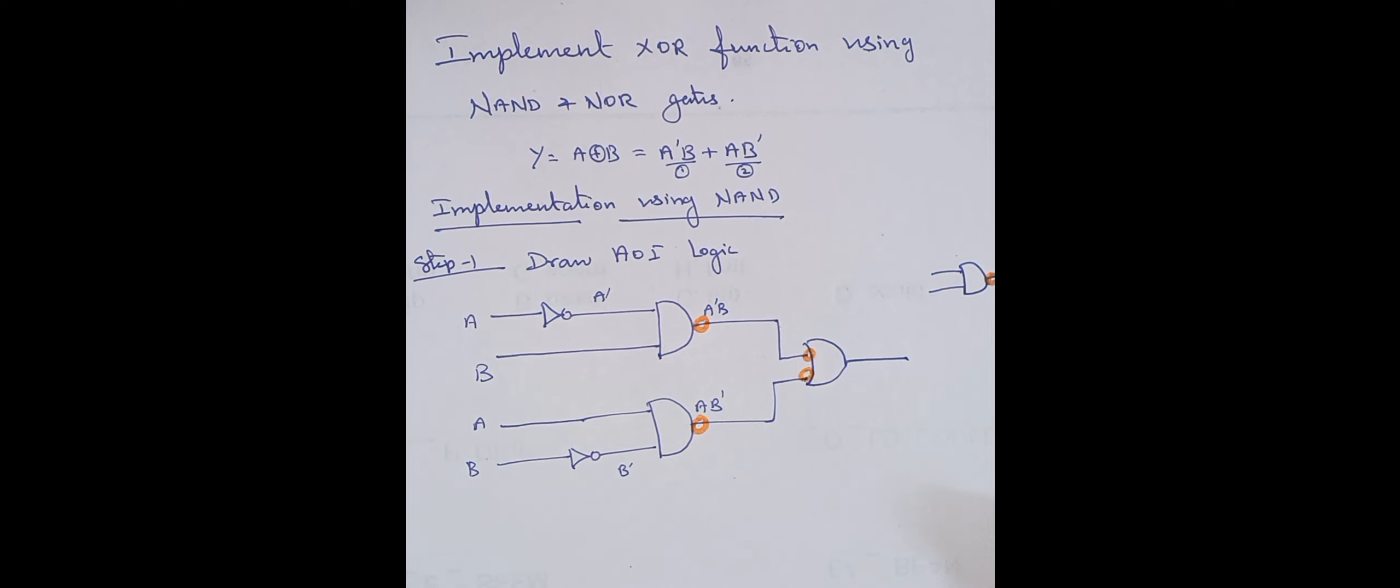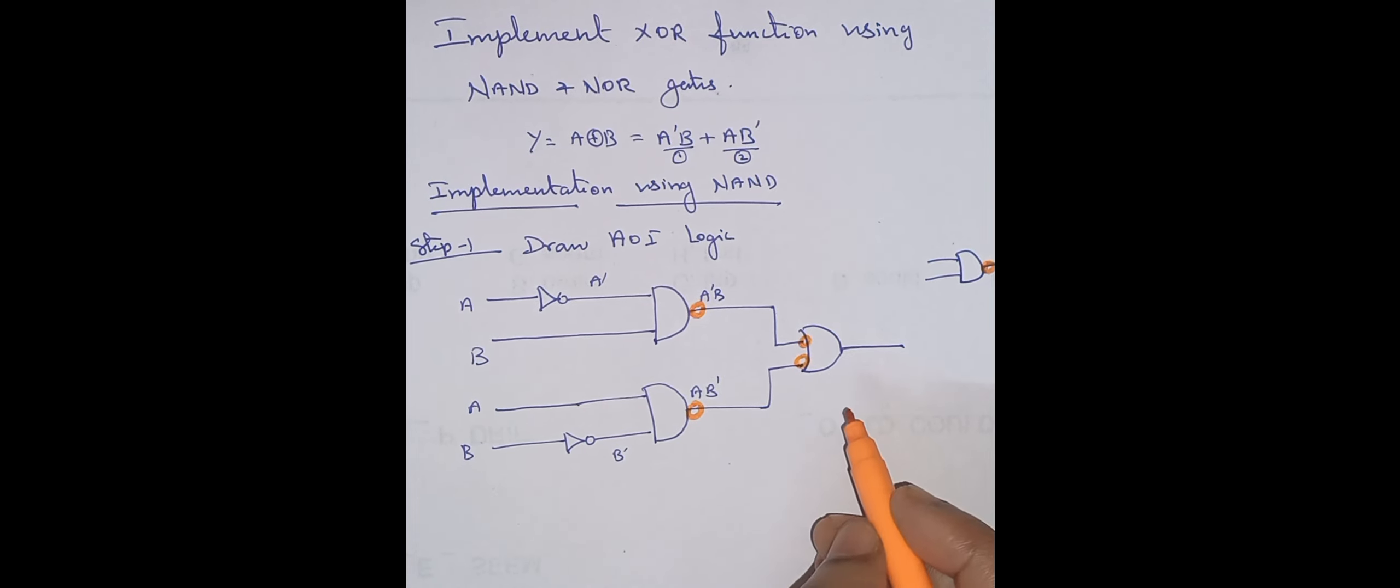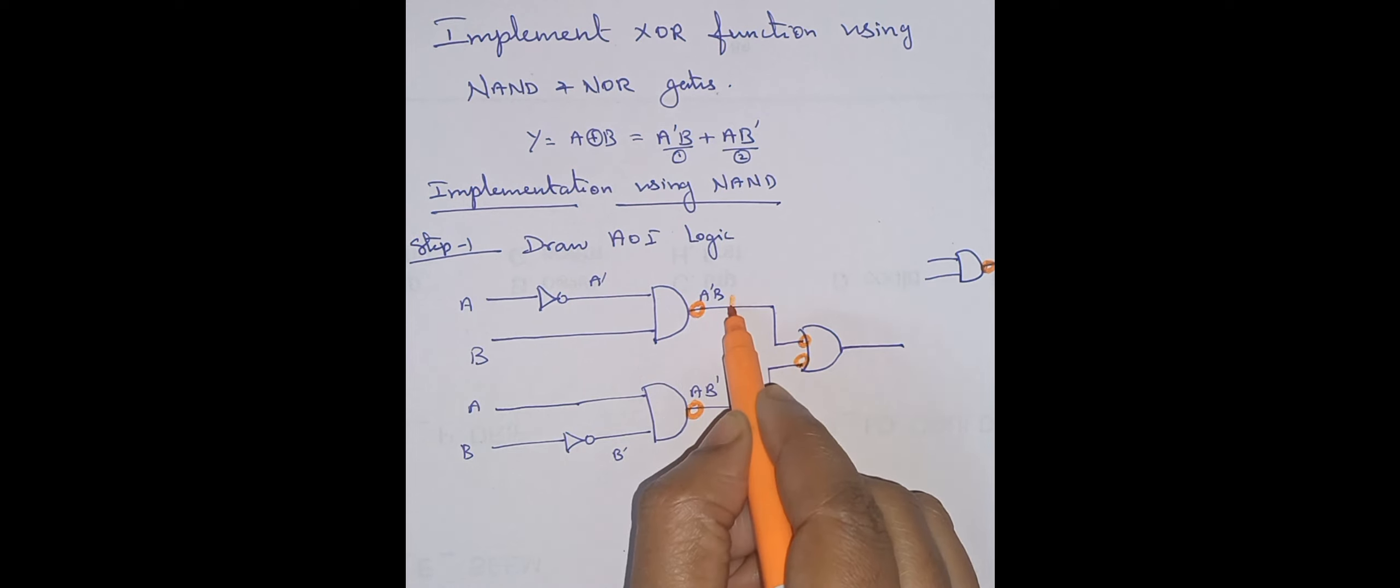Step 2 is, the line which receives the bubble is to be added with an inverter. So on the line with one bubble, I add one inverter, and another bubble, for that also I add another inverter. Here also, I have two bubbles, hence I add two inverters.